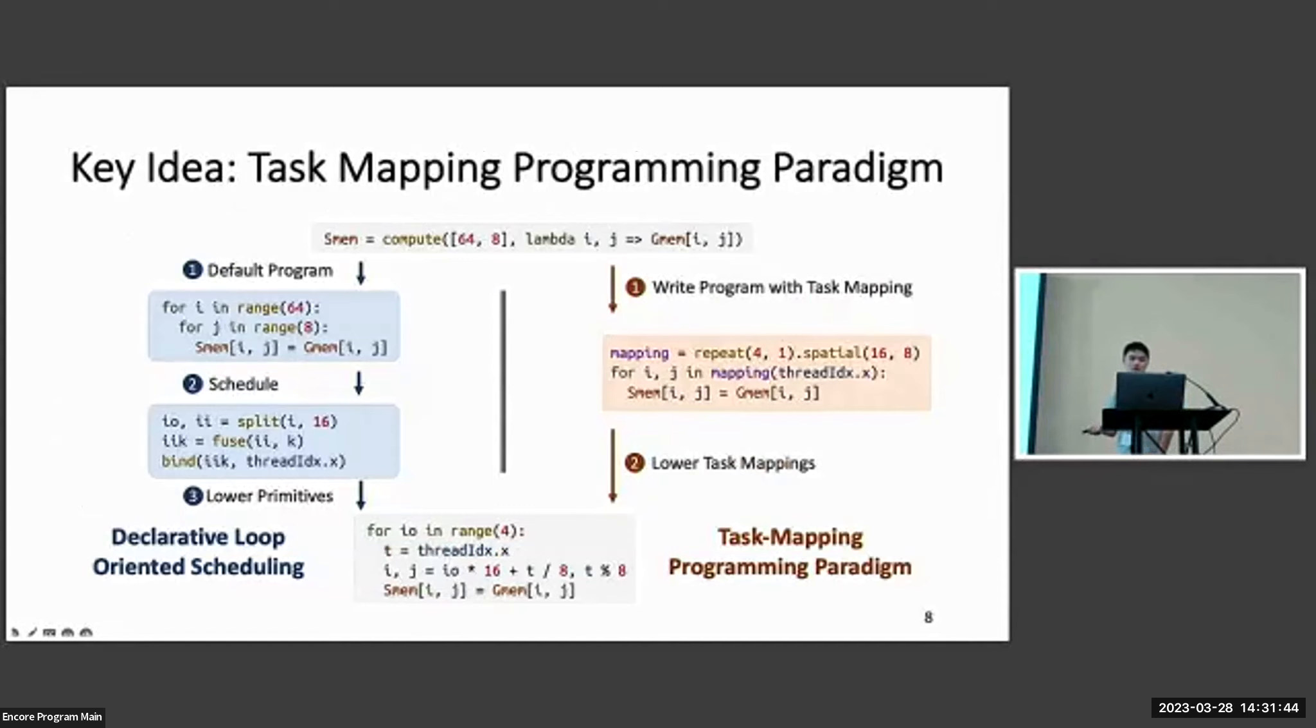In this work, we proposed a new way to construct tensor programs. We call it task mapping programming paradigm. Instead of using schedule primitives to transform the tensor program, we proposed a new way to do that. There is a concept called task mapping to replace the schedule primitives. We directly write the task mapping in the tensor program and use it, and then we'll lower it to the target tensor program as TVM does.